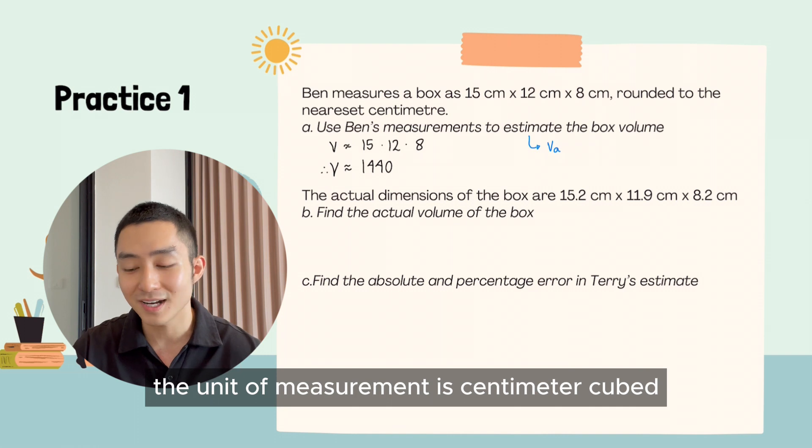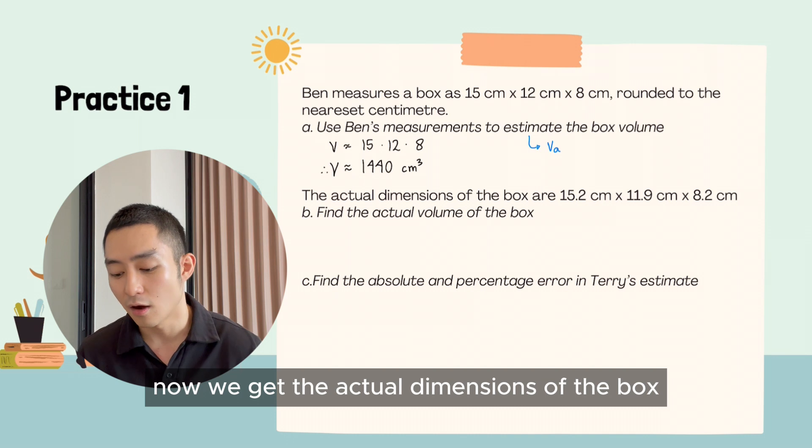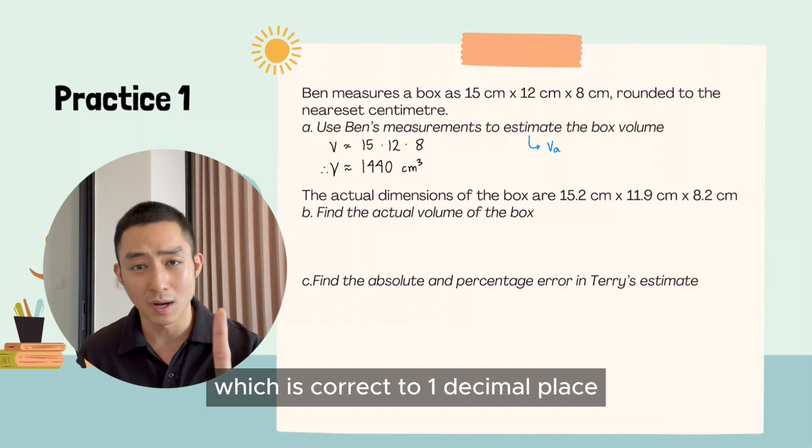the unit of measurement is centimeter cubed. Now we get the actual dimensions of the box, which is correct to one decimal place.